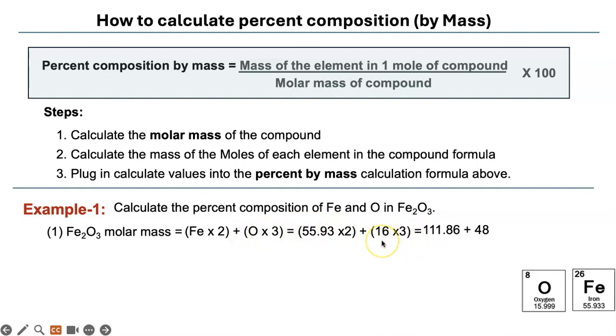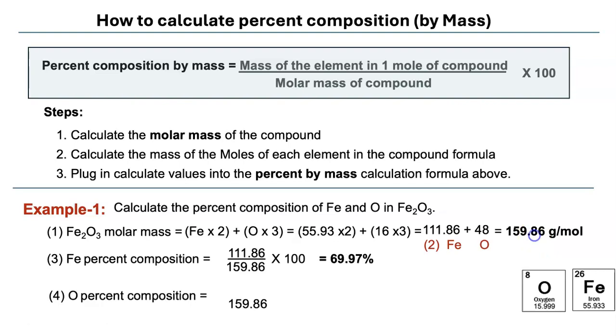You substitute these values and you get this. This is step two, you will calculate the total mass of all the moles of iron and oxygen in the molar mass of the compound, and then you add them together. This will be your molar mass. So you're going to divide this number, Fe at 111.86, by 159.86 for the percent mass of oxygen. Here is that calculation for Fe and here is that calculation for oxygen.